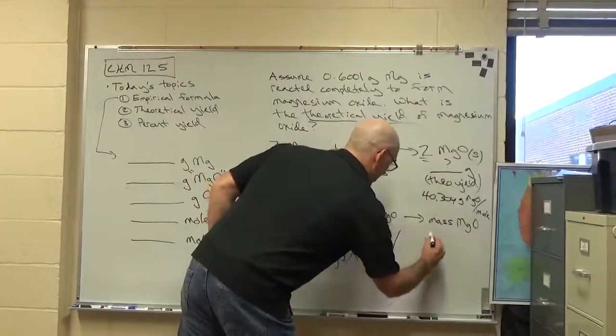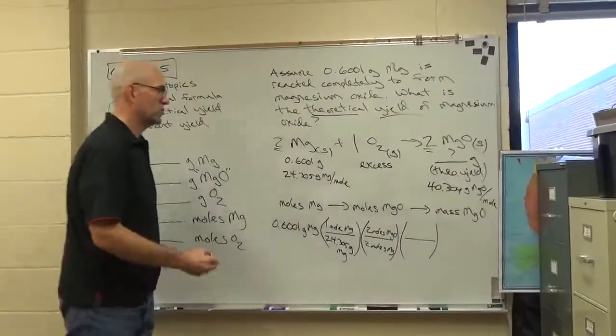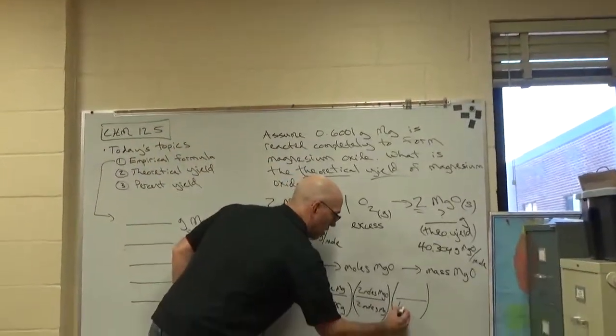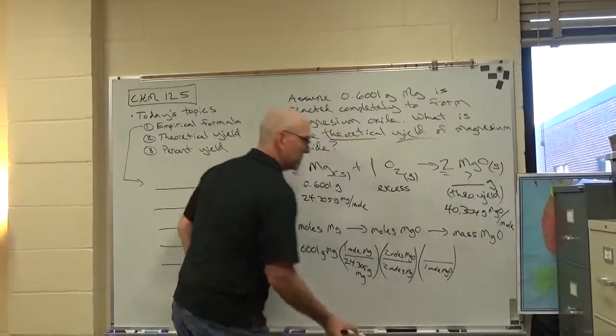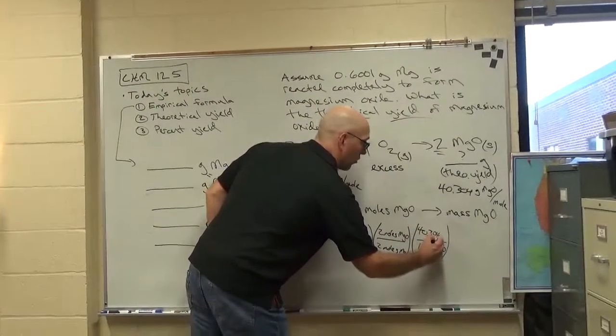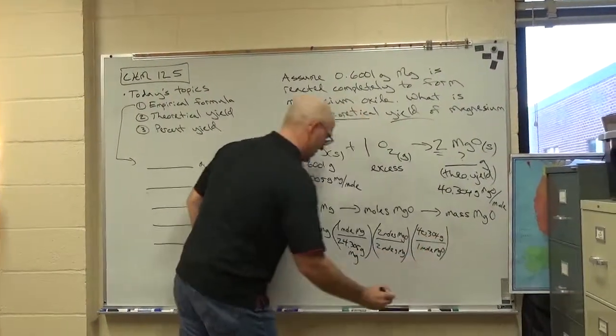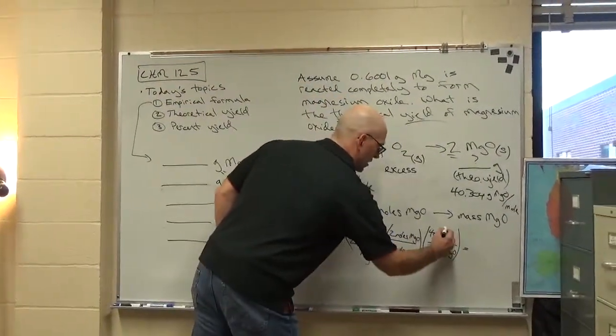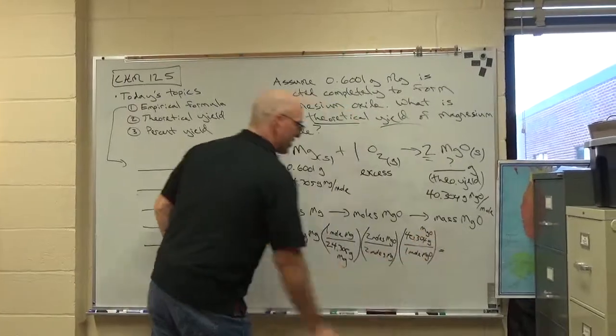And then, whoa I almost slipped, and then you want to go to mass of magnesium oxide. So we know that a mole of magnesium oxide is 40.304 grams. And I'll put grams of MgO. Sorry, kind of small there.